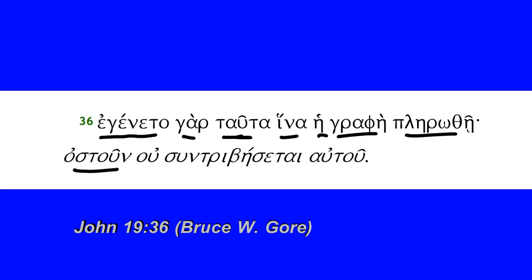'Ostoun' — of course this is the word for bone; we have various English words like 'osteo' and those kinds of words. It's the nominative here of this neuter noun — 'ostoun,' a bone. The negation 'ou,' and then 'suntribēsetai' from 'suntribo,' meaning to break something. This is the future passive indicative, third person singular: a bone — 'ou,' negation — will not be broken. And then 'of him,' of course, the possessive.